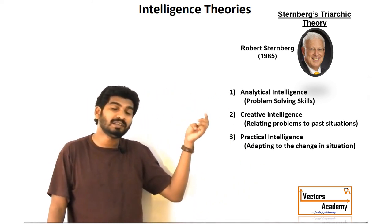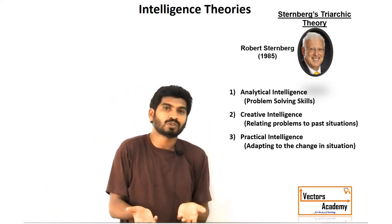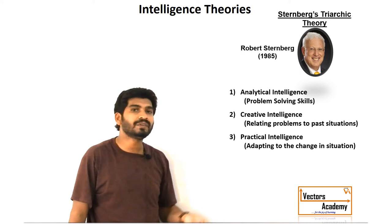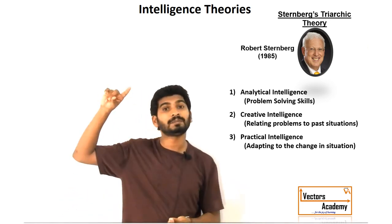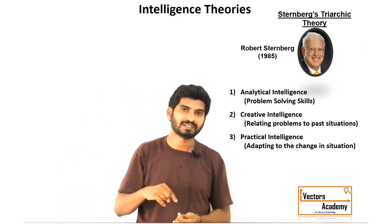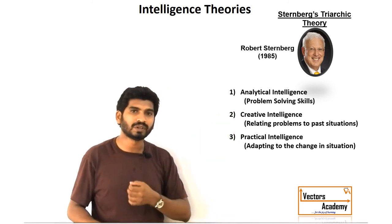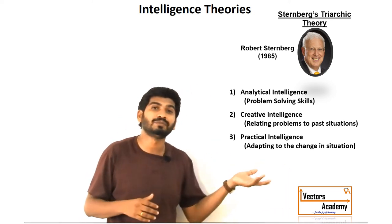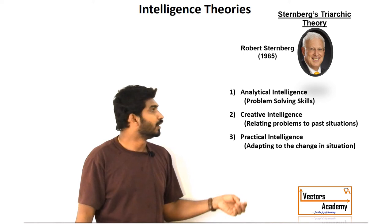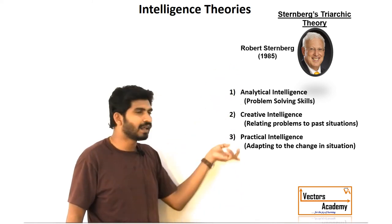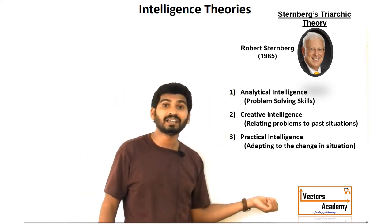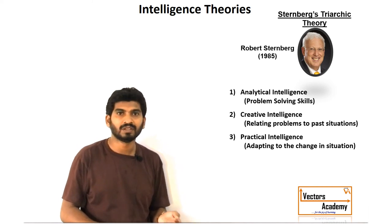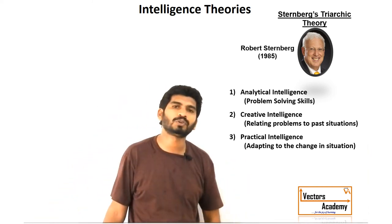Analytical intelligence basically means the problem-solving techniques of an individual — how an individual is able to solve problems on his own. Creative intelligence means how a person is able to use past experiences to solve problems in the present. Practical intelligence means how a person is able to adapt to changes in the environment or a given situation. All these parameters are checked by the IQ test, which we call the intelligent quotient test.